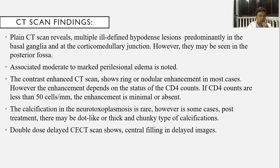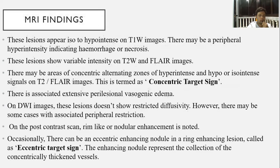Double-dose delayed contrast CT scans show central filling in delayed images. On MRI, lesions appear as iso- to hypointense on T1-weighted images. Hyperintensity may be seen in cases of hemorrhage or necrosis on T1-weighted images. Variable signal intensity is noted on T2-weighted images. There may be areas of concentric hyperintensity and hypo- or iso-intensity on T2-weighted images, which is termed the concentric target sign.